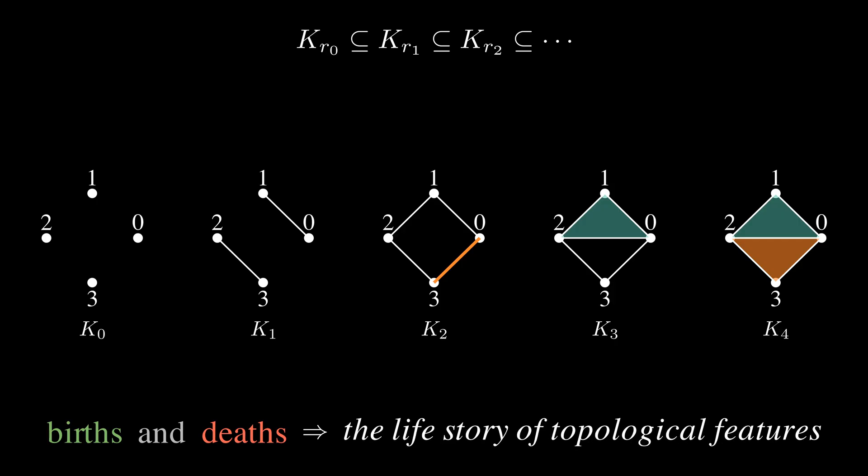This language of births and deaths gives us a way to keep track of the life story of topological features. And that's exactly what persistent homology is about, recording which features appear, how long they persist, and which ones are just fleeting noise.